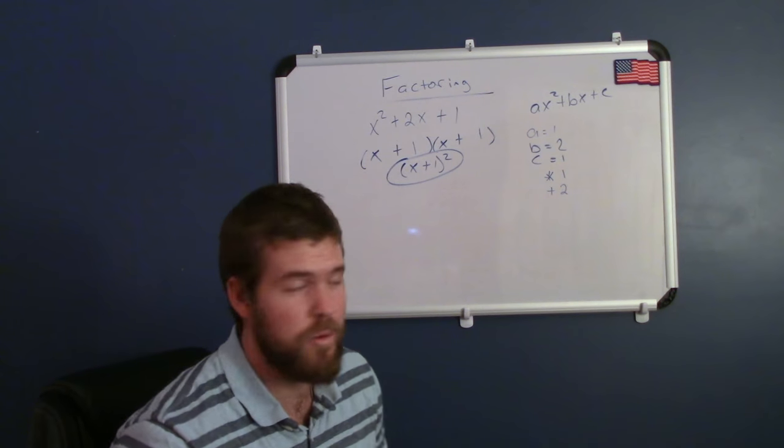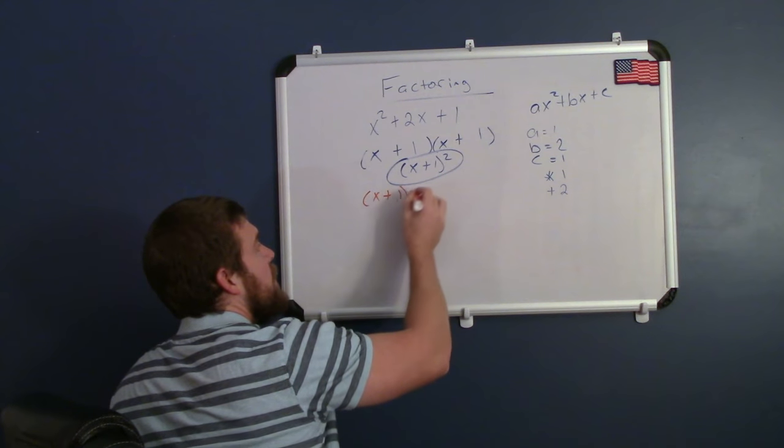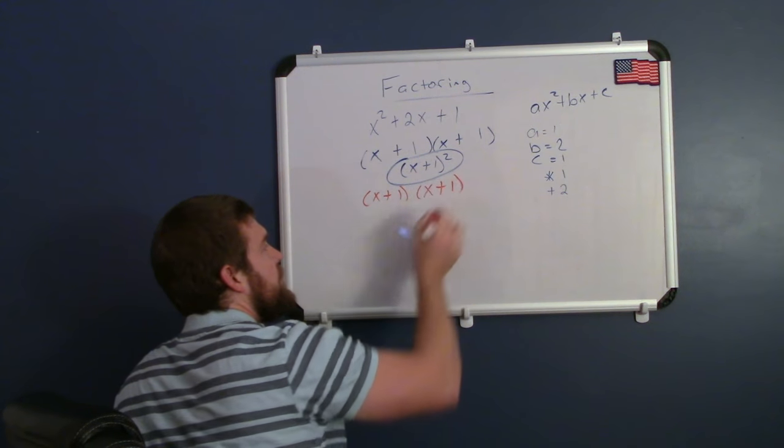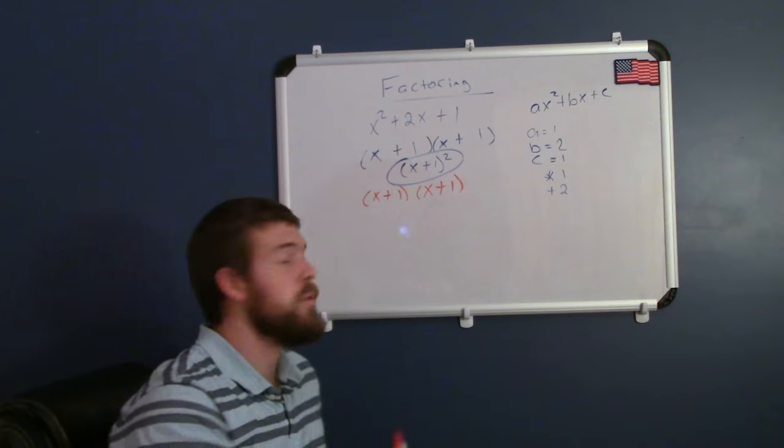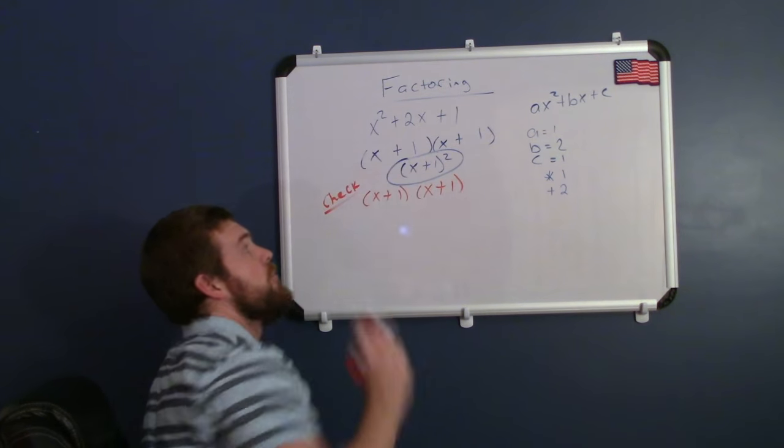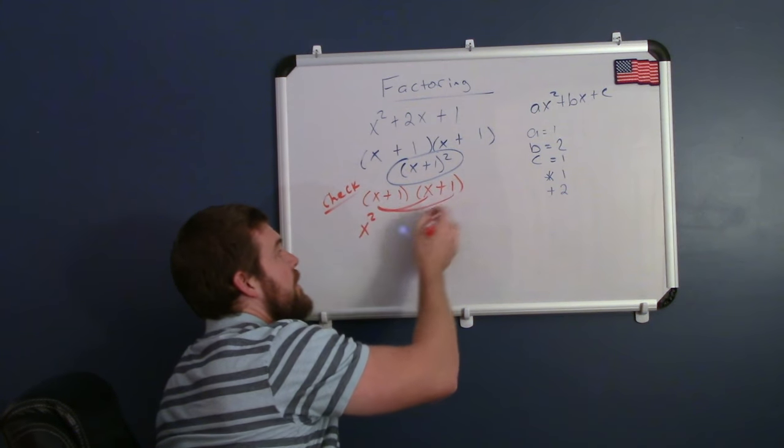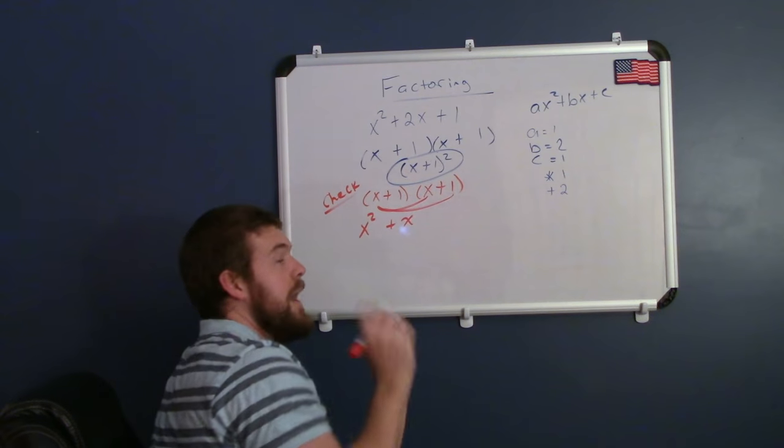Now if I wanted to check my work, I could rewrite this as being x plus 1 times x plus 1. And I would have to multiply out to see if I got my original expression up top. So I multiply x times x, which gives me x squared. x times 1 is x, or 1x.